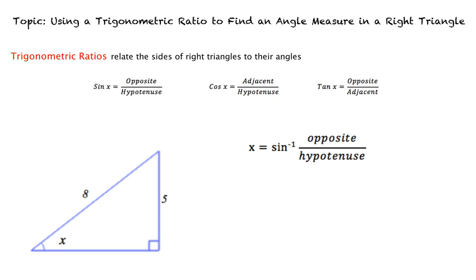From here, we can fill in the problem with our known values. We know the opposite side length is 5, and the hypotenuse is 8, so we will write x equals the inverse sine of 5 over 8.